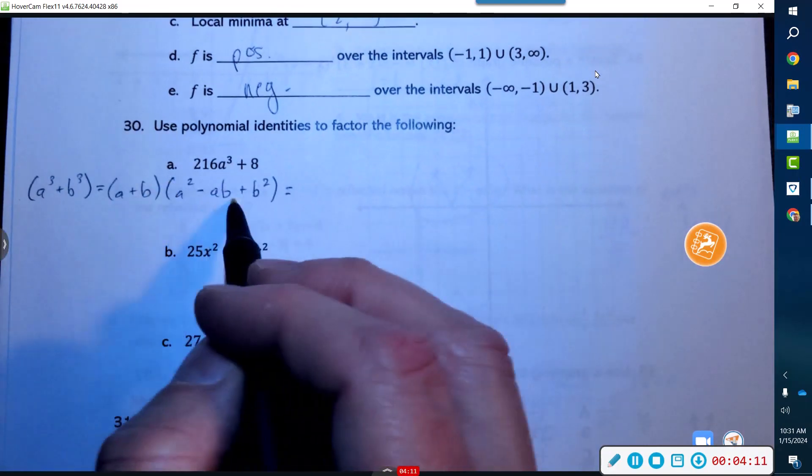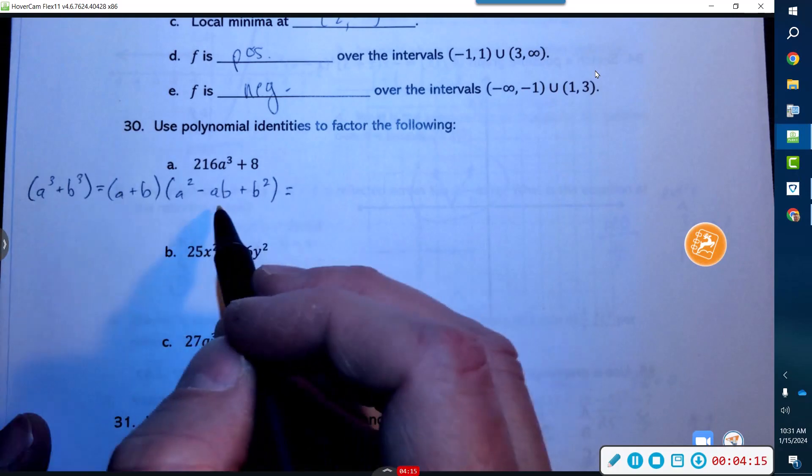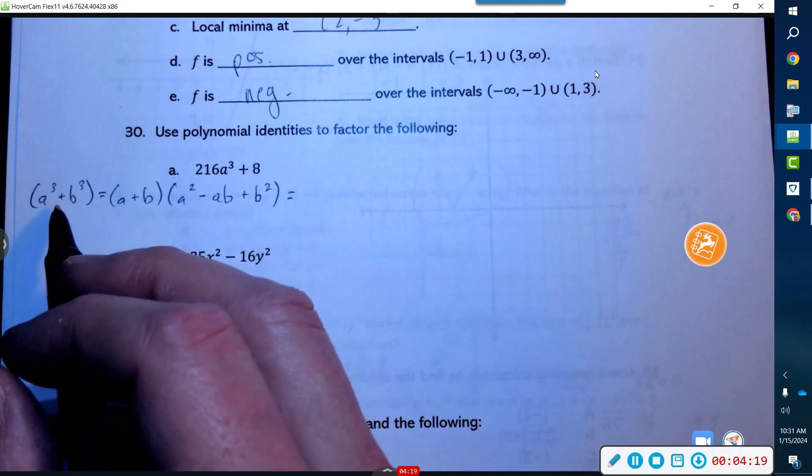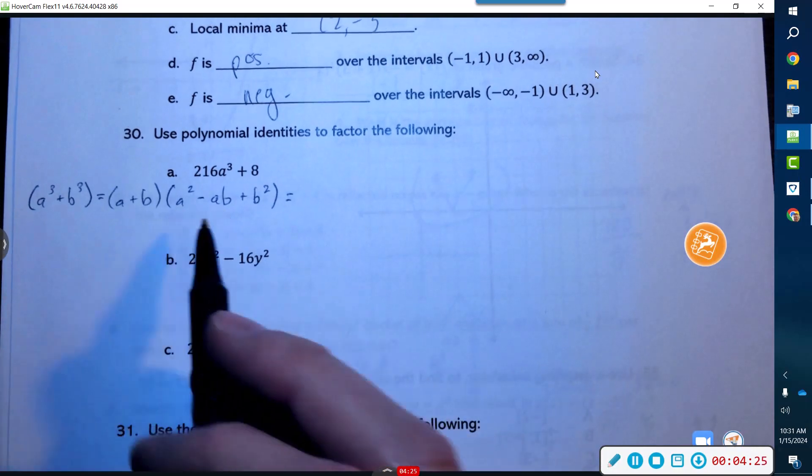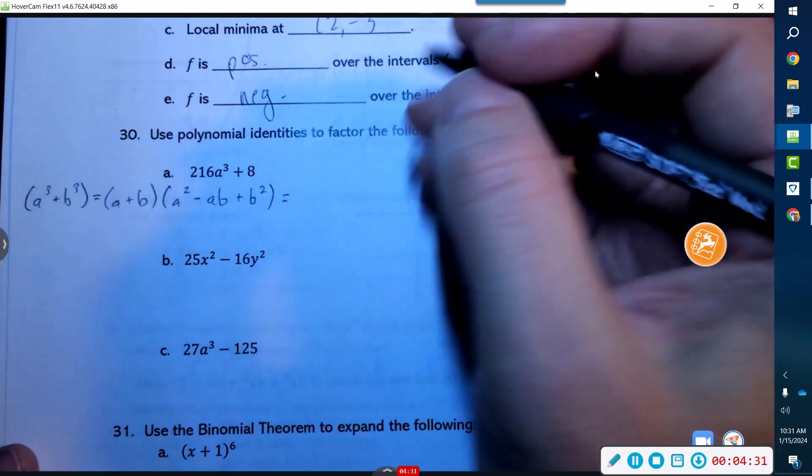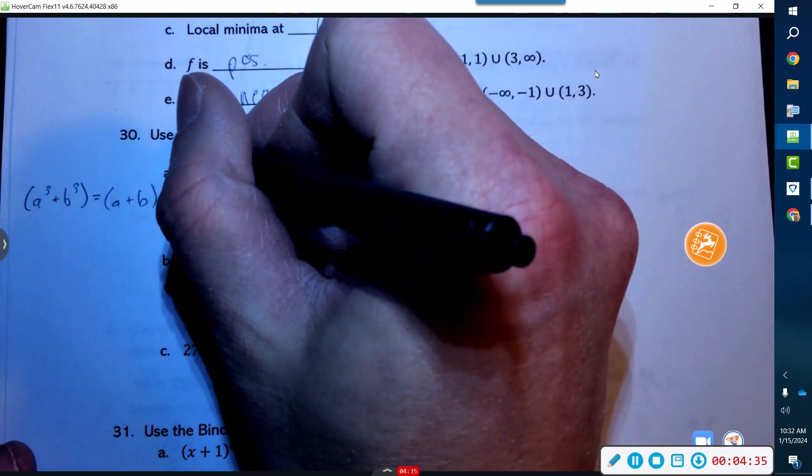You could FOIL this if you'd like. Go ahead and FOIL this and you will get this. Go ahead and FOIL it, you'll notice that there's a whole bunch that cancel out and you will get this term. So you can try it if you'd like if you need that proof, or you can basically say to yourself, I'm going to trust Mr. Draper, it works. And then maybe eventually if I've got the time I'll do that.